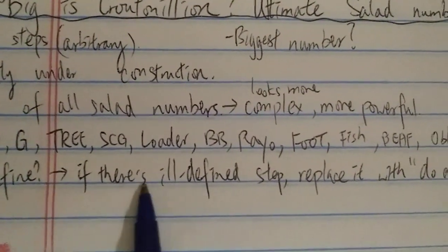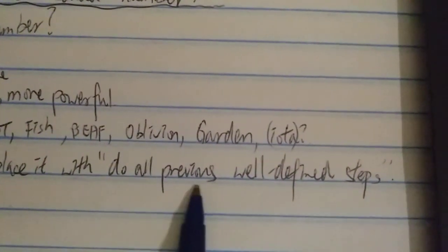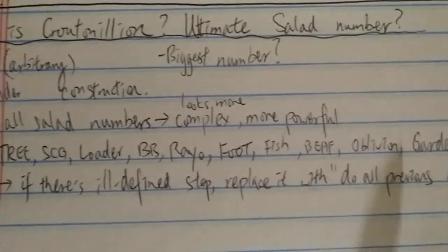Then whenever there's an ill-defined step, just replace it with something, so do all PVS well-defined steps. So basically, you can look at it or try to imagine how big it is.